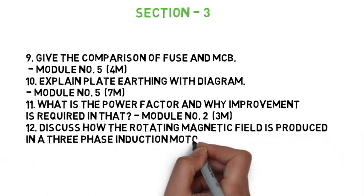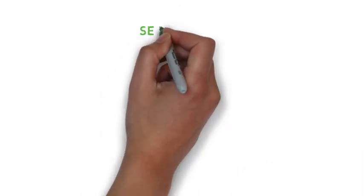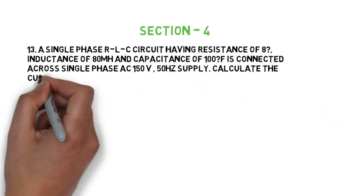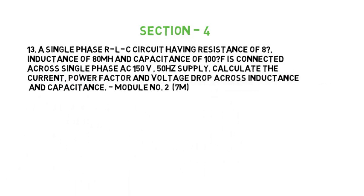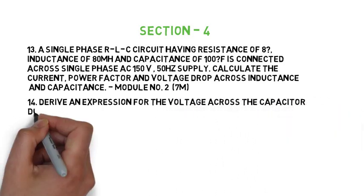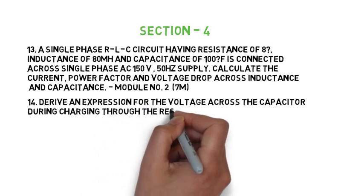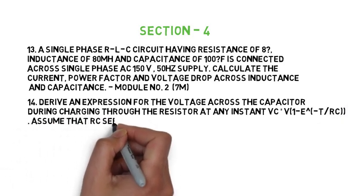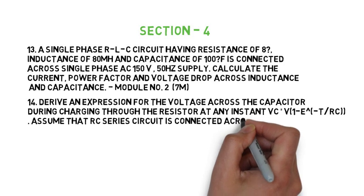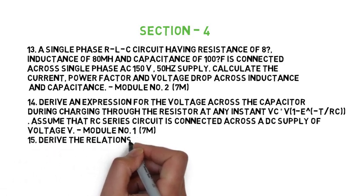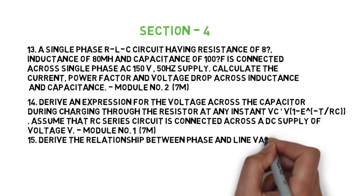Now moving to Section 4, which is numerical. The 13th question is a numerical problem where you calculate current, power factor, voltage drop — 7 marks. The 14th question: Derive an expression for the voltage across the capacitor during charging through a resistor. Assume an RC series circuit connected across a DC supply voltage V, and derive that expression — 7 marks. And the last, 15th question: Derive the relationship between phase and line values of voltage and current in case of a 3-phase star connection — 7 marks.